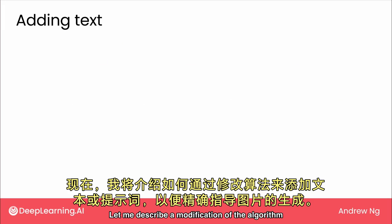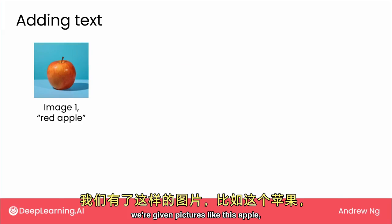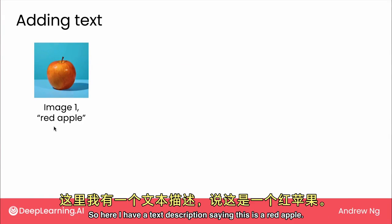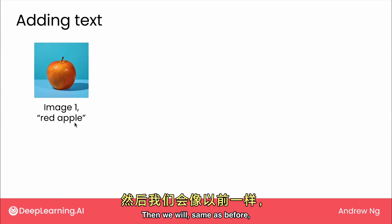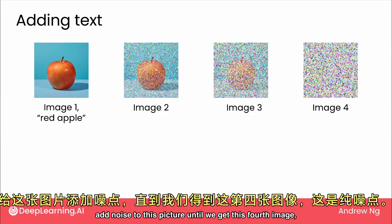Let me describe a modification of the algorithm that lets you add a text prompt to tell it what you want it to generate. In this training data, we're given pictures like this apple, as well as a description or prompt that could have generated this apple — here I have a text description saying this is a red apple. Then, same as before, we add noise to this picture until we get a fourth image which is pure noise.